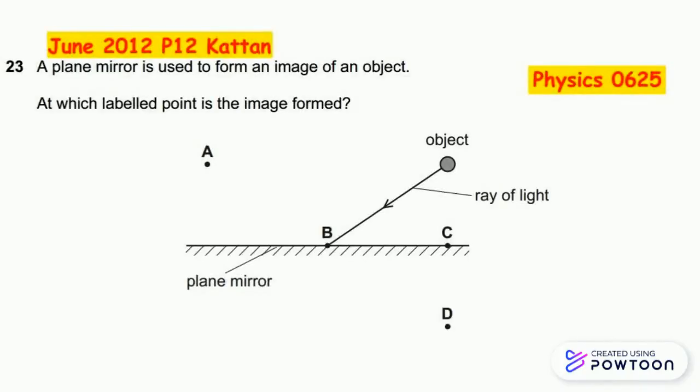Hi guys and welcome to our physics series. Today we have June 2012 paper 12 question 23. A plane mirror is used to form an image of an object. At which labeled point is the image formed?